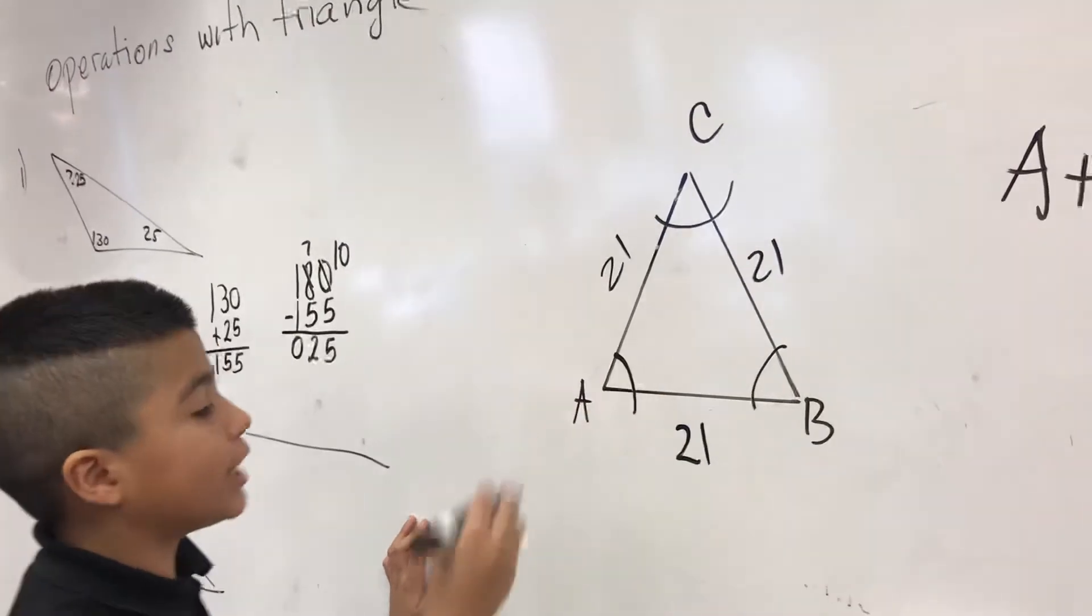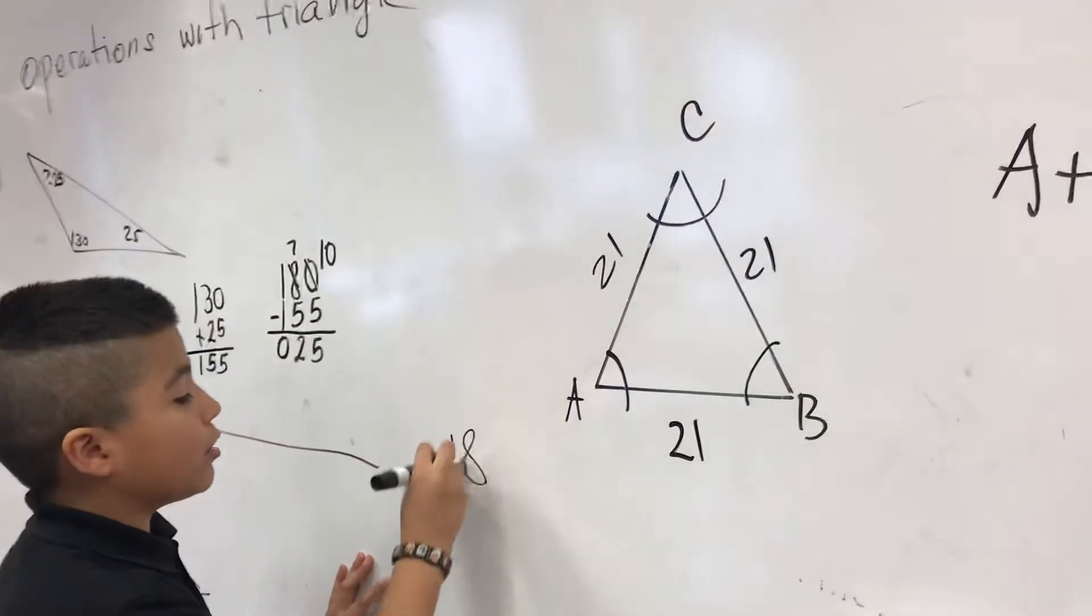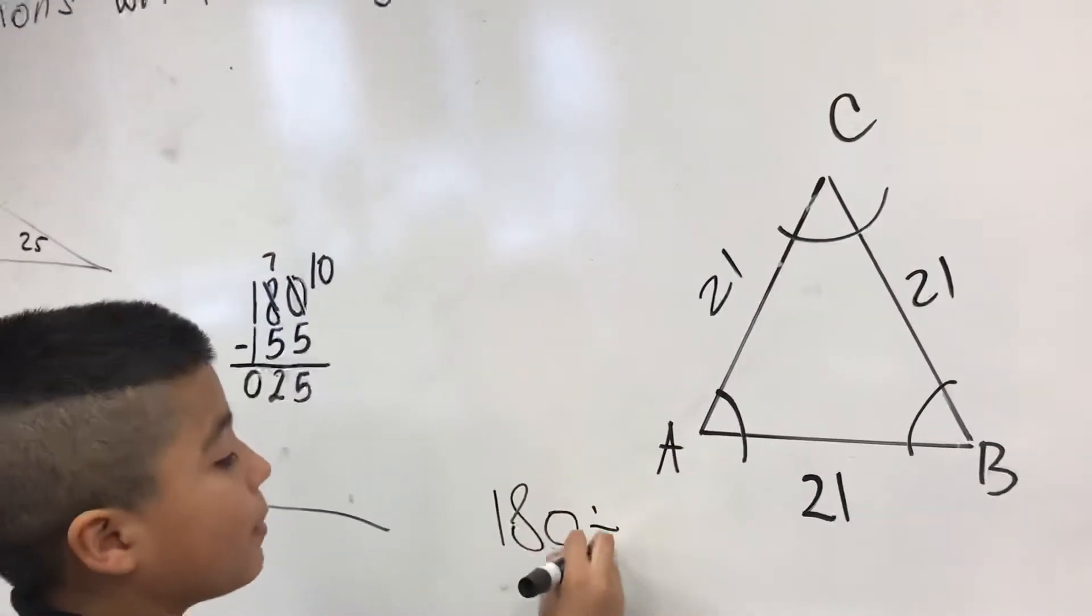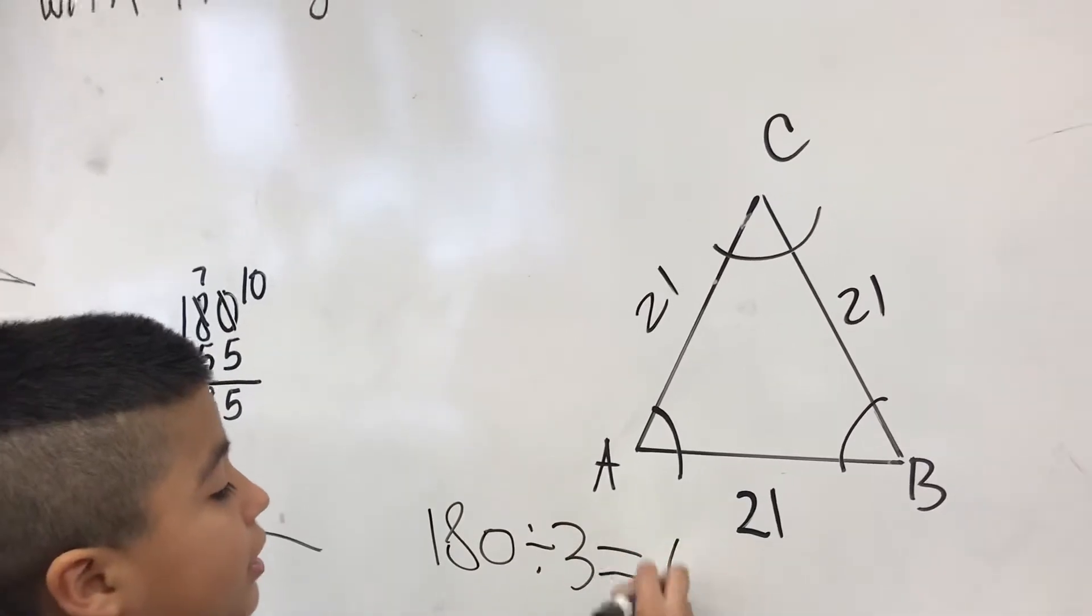So, in this triangle, the whole angle is 180. So, you divide 180 divided by 3, it's going to equal 60.